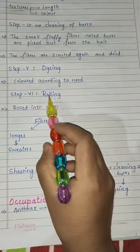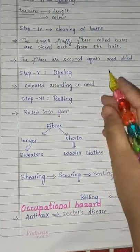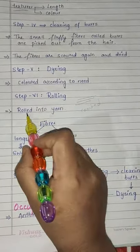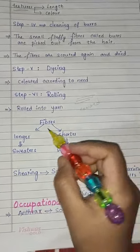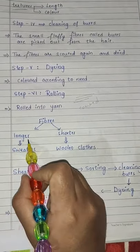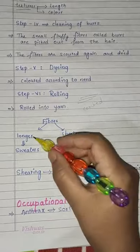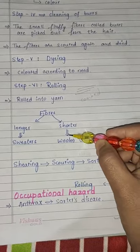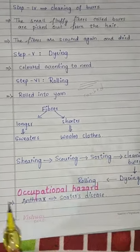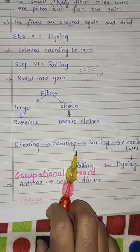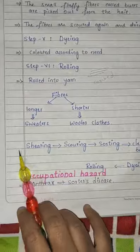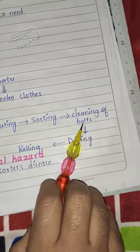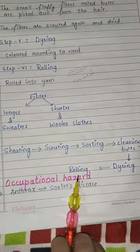Step six is rolling: the fibers are straightened, combed, and then rolled into yarns. The fibers are of two types — longer fibers and shorter fibers. Longer fibers are used to make sweaters, and shorter fibers are used to make woolen clothes. The complete processing of fibers into wool follows these steps: shearing, scouring, sorting, cleaning of burrs, dyeing, and rolling.